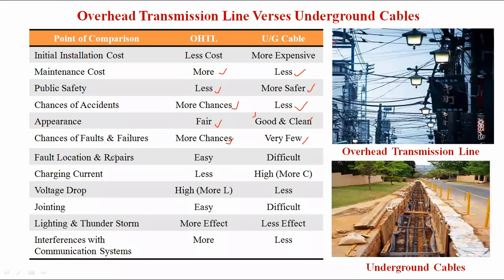Fault location — identification and rectification of fault is easy in overhead transmission lines because all parts and conductors are visible to the naked eye. But in underground cable, identifying where the fault has occurred is very difficult and rectification is also difficult. Effect of charging current: in overhead lines the charging current effect is less, but in underground cable it is more due to capacitance. The three parameters are resistance, inductance, and capacitance. Charging current IC = 2πFC × V_phase.